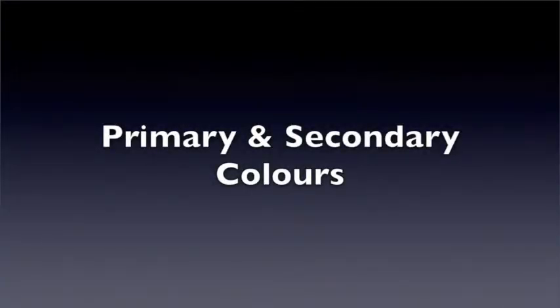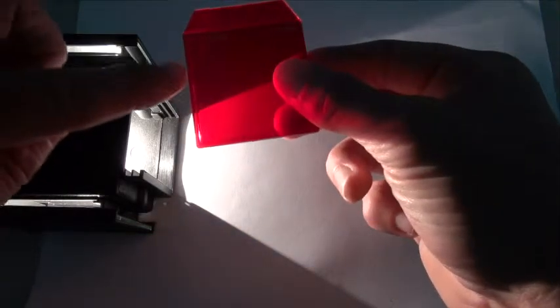In this video we're going to look at primary colors and the secondary colors they produce. Here's a ray box. We've turned it round so that it's got the mirrors facing outwards and I'm going to be using certain filters.